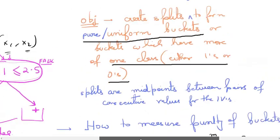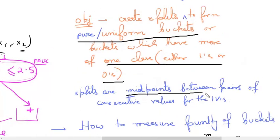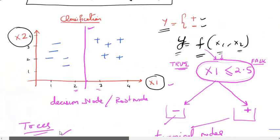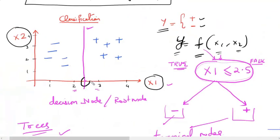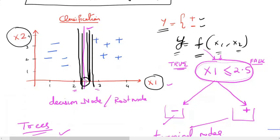Splits are made at the midpoints of consecutive pairs of values of the independent variable. We intentionally split at 2.5 because it is the midpoint of 2 and 3. Otherwise we could draw an infinite number of lines between 2 and 3 — all perfectly separating the classes — so we select the line that passes right through the middle of consecutive points.